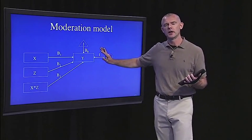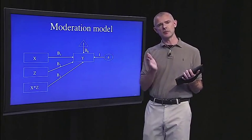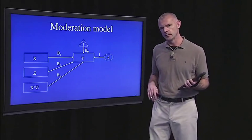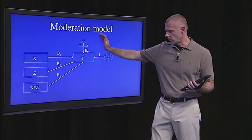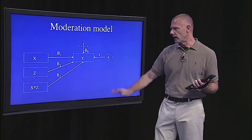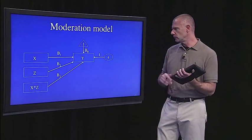Again, we could represent that graphically, like we did for the mediation models. Not quite as interesting as the mediation models, but we could represent it graphically. So we have X, Z, and the product, all predicting Y.